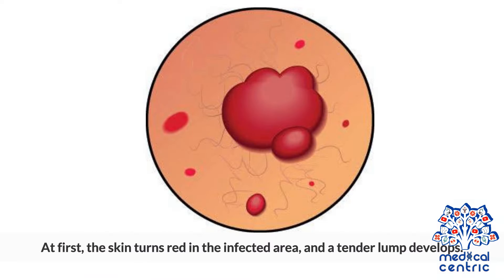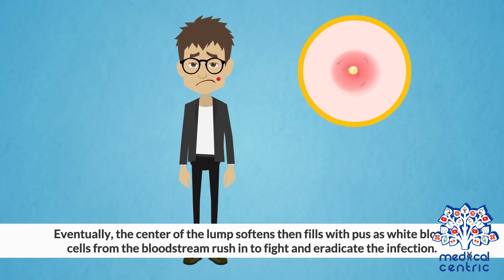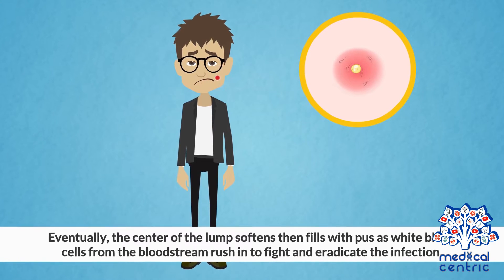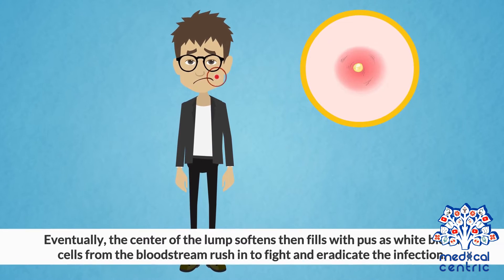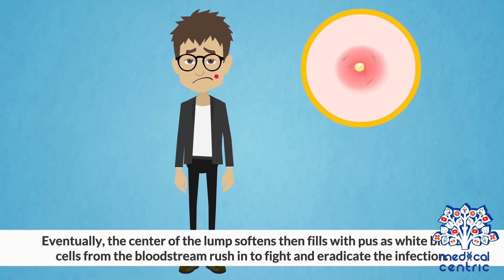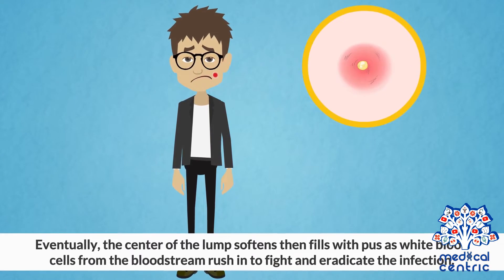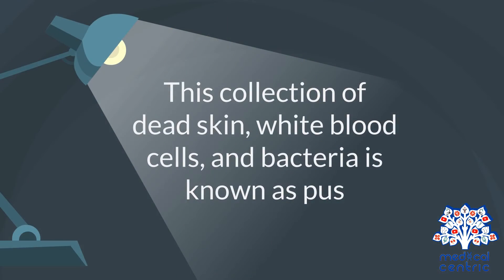At first, the skin turns red in the infected area, and a tender lump develops. Eventually the center of the lump softens, then fills with pus as white blood cells from the bloodstream rush in to fight and eradicate the infection. This collection of dead skin, white blood cells, and bacteria is known as pus.